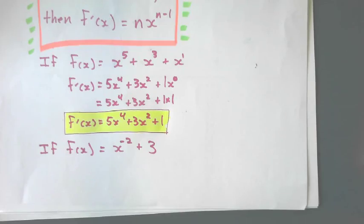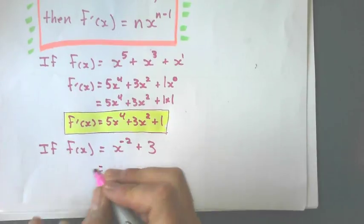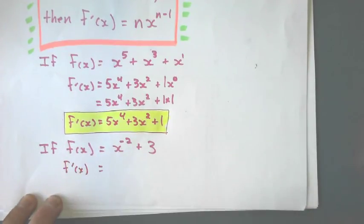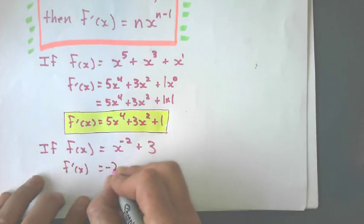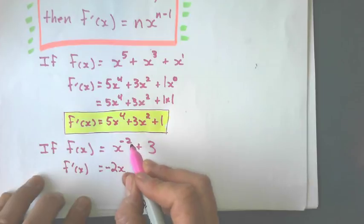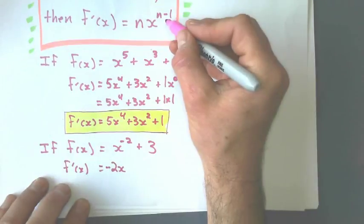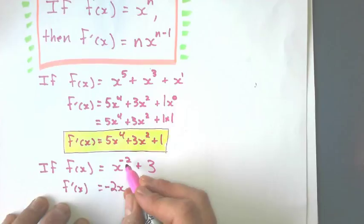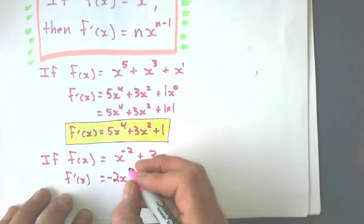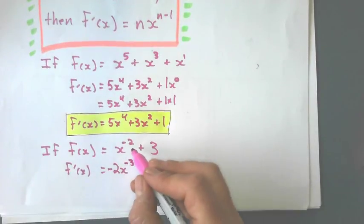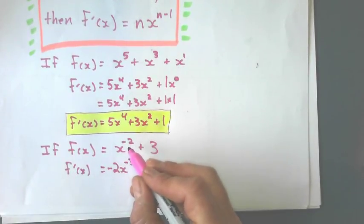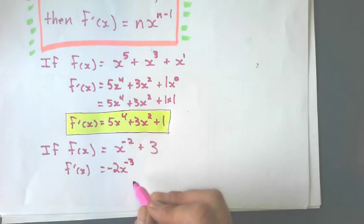Okay, let's write this example where I've got a negative exponent, but the rule still applies. Okay? So I want to find the gradient function. Same thing applies. I bring the negative 2 is the exponent. Put that in front of the x, and you still subtract 1 from that exponent, and negative 2 minus 1 is not negative 1, it's negative 3.